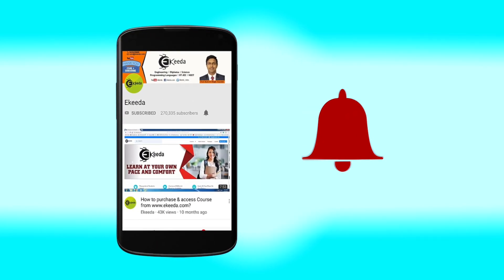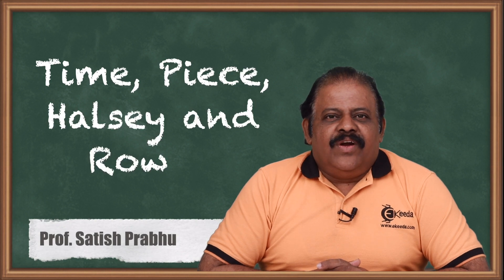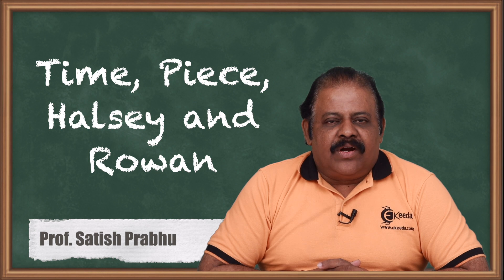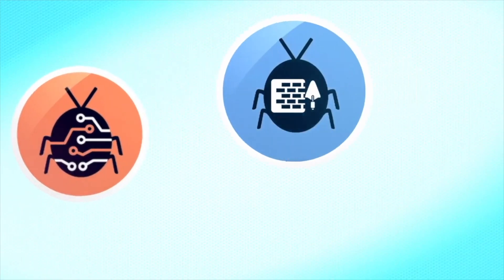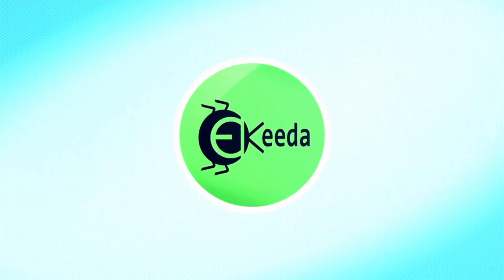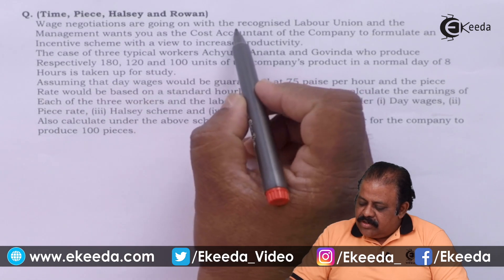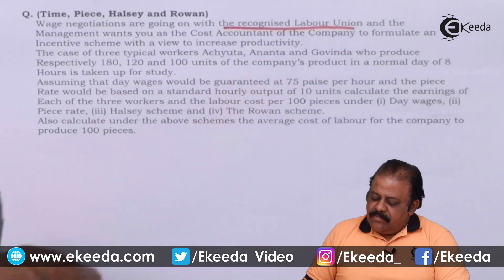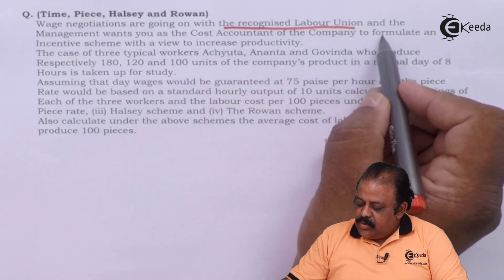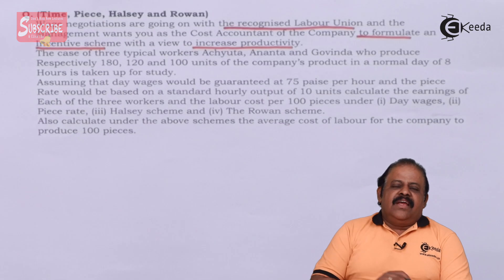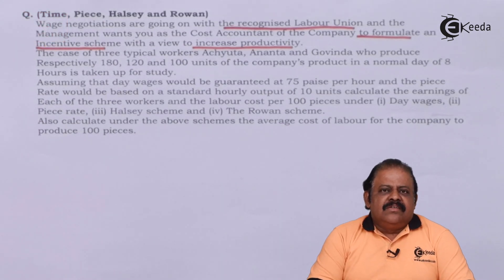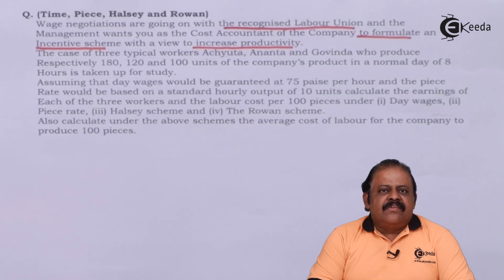Hello friends, we'll discuss one question based on the Halsey plan and Rowan plan, where we are going to calculate time wages as well as piece rate wages. Wage negotiations are going on with a recognized labor union, and management wants you as cost accountant of the company to formulate an incentive scheme with a view to increase productivity by introducing an incentive scheme.